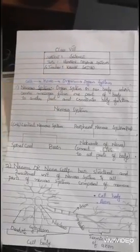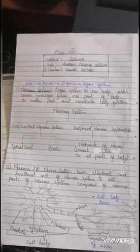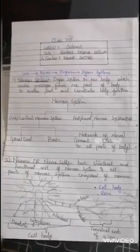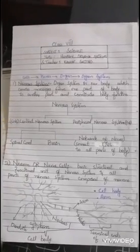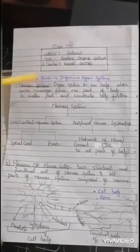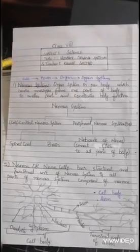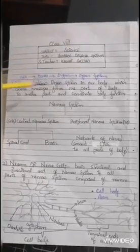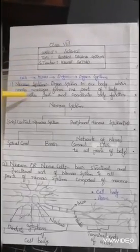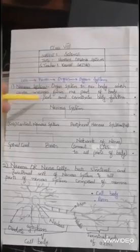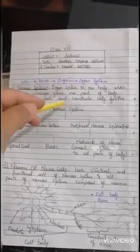In this chapter we will discuss various types of organ systems, but today we are going to start the nervous system. So what is the nervous system? The nervous system is an organ system in our body which carries messages from one part of the body to another and coordinates body function.